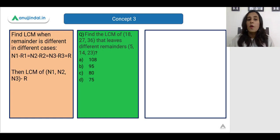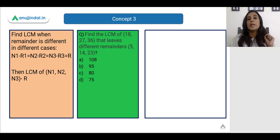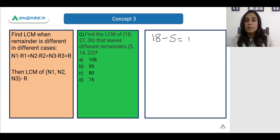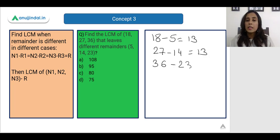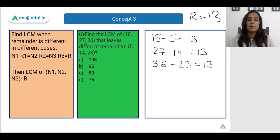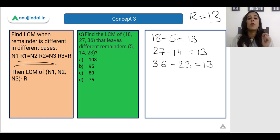Now let us see another concept: finding the LCM when the remainder is different in each case. Here we subtract each remainder from its corresponding number and verify the value is the same. For example: 18 − 5 = 13, 27 − 14 = 13, and 36 − 23 = 13. Since the value r = 13 is constant, we then find the LCM of 18, 27, and 36 and subtract 13 from it.